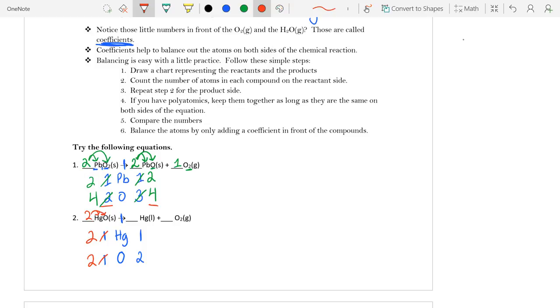That also affects the mercury. Two times one is two. So now I go to my product side and I say, okay, I can't just magically make that two, but I can add another mercury in there.